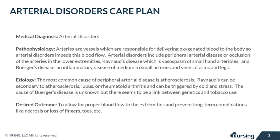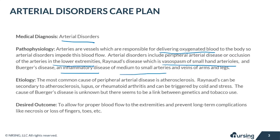Arterial disorders are an issue because arteries are the vessels responsible for delivering oxygenated blood to the body. Peripheral arterial disease, also known as PAD, Raynaud's disease, and Buerger's disease are all examples of arterial disorders. PAD specifically is the occlusion of the arteries in the lower extremities, while Raynaud's disease is identified by vasospasms of small hand arterioles. Buerger's disease is an inflammatory disease of the medium to small arteries and veins in the arms and the legs.